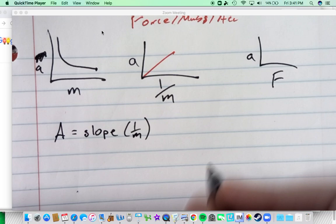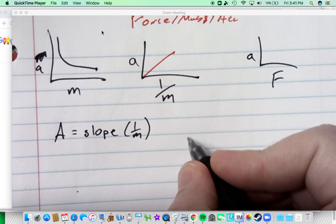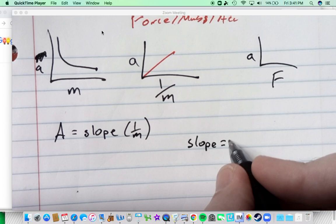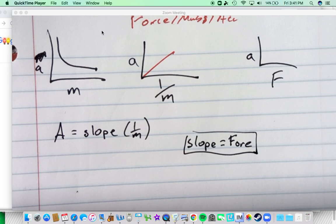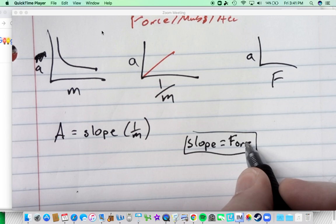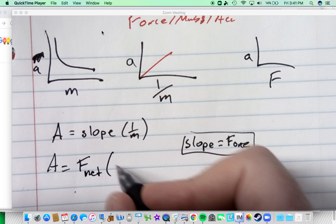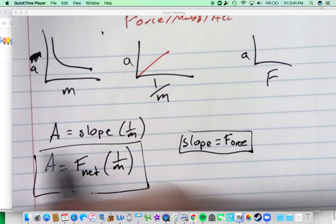but a couple groups, the slope that we had in the columns was equal to the net force. And it wasn't perfect but a few groups had pretty good numbers. So we then said that A was equal to force, which we called net, times one over mass.